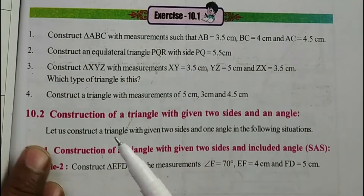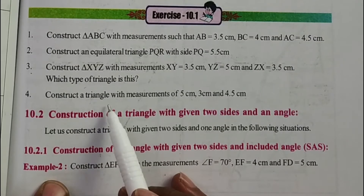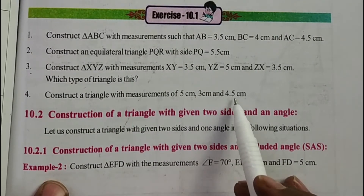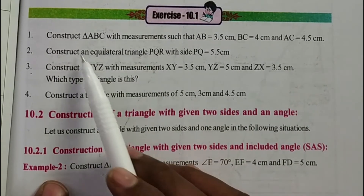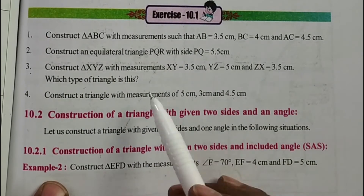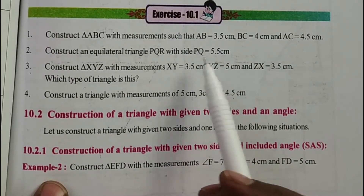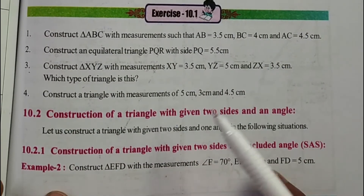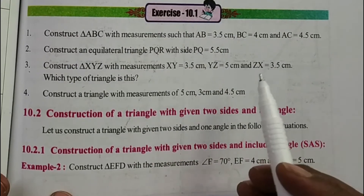The construction question is: construct a triangle with measurements of 5 cm, 3 cm, and 4.5 cm. Here, no vertex names like ABC, PQR, or XYZ are mentioned, so you can take any. I preferred ABC — you can take as you wish.